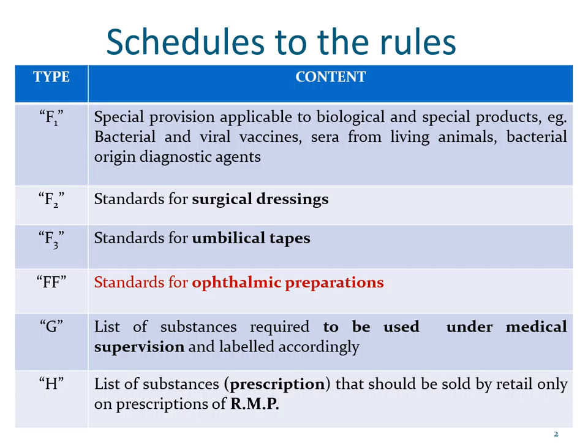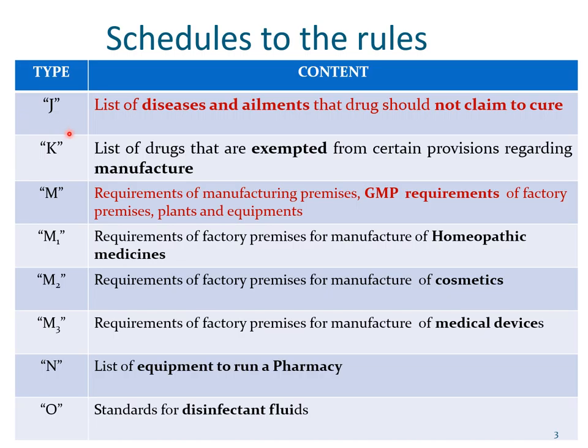Schedule J gives a list of diseases and ailments that a drug should not claim to cure. This is another important schedule and we will also look at the act that governs such substances and the offenses and penalties for making false claims. Schedule K is a list of drugs that are exempted from certain provisions.